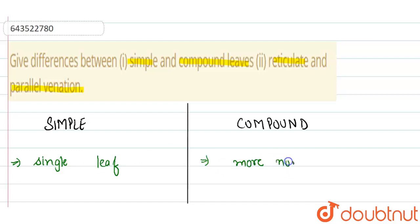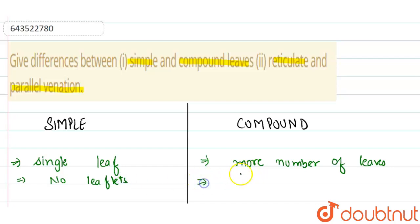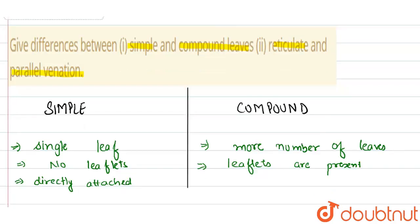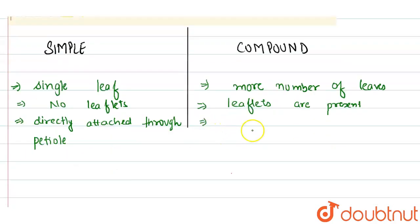In case of simple leaf, there are no leaflets because only a single leaf is present, therefore no leaflets are present. Whereas in case of compound leaves, leaflets are present. In simple leaf, the leaf is directly attached to the stem via petiole — the petiole occurs in between the leaf and stem.